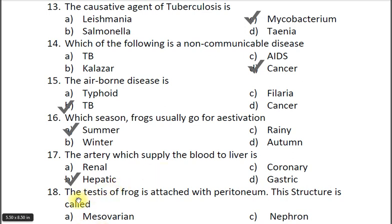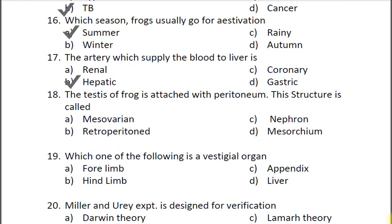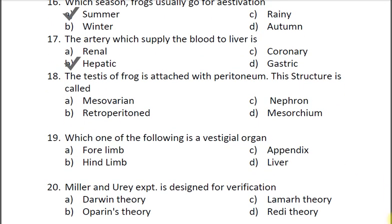Question eighteen: The testes of the frog is attached with the peritoneum. This structure is called — A mesovarian, B nephron, C retroperitoneum, D mesorchium. The correct answer is D mesorchium.